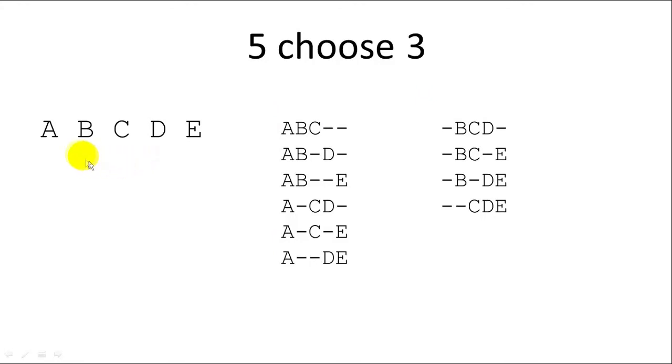But we could actually boil this problem down. We could reduce this problem to two smaller problems. So if we choose A then we would need to choose two of the remaining four items. So it would become a four choose two problem. And that's what we have here on these items on the left. You can see that we chose A for all of these and we need to choose two of the remaining four and there are six different possibilities.